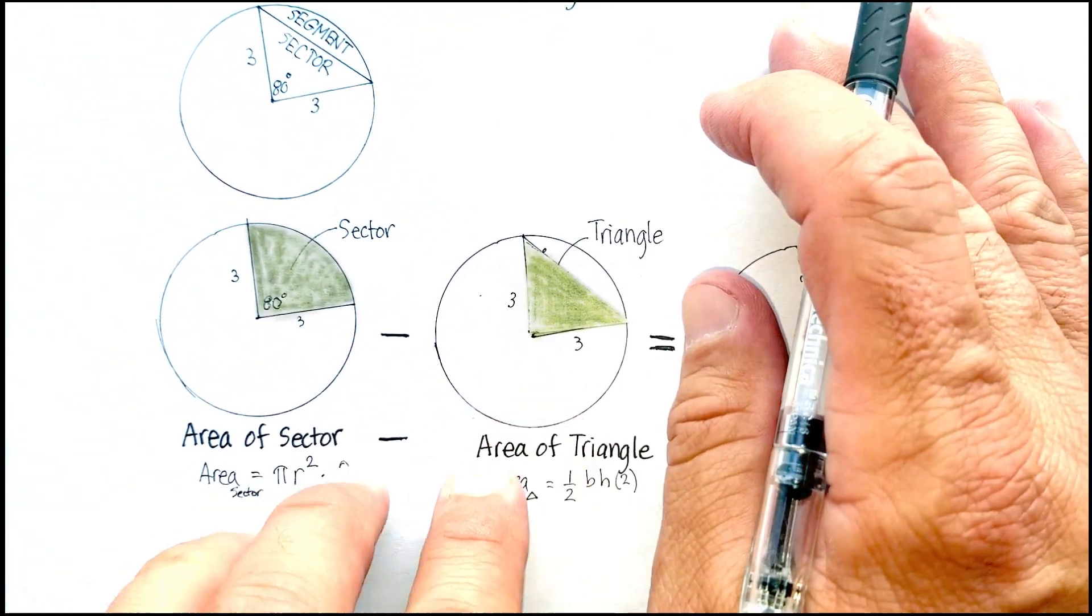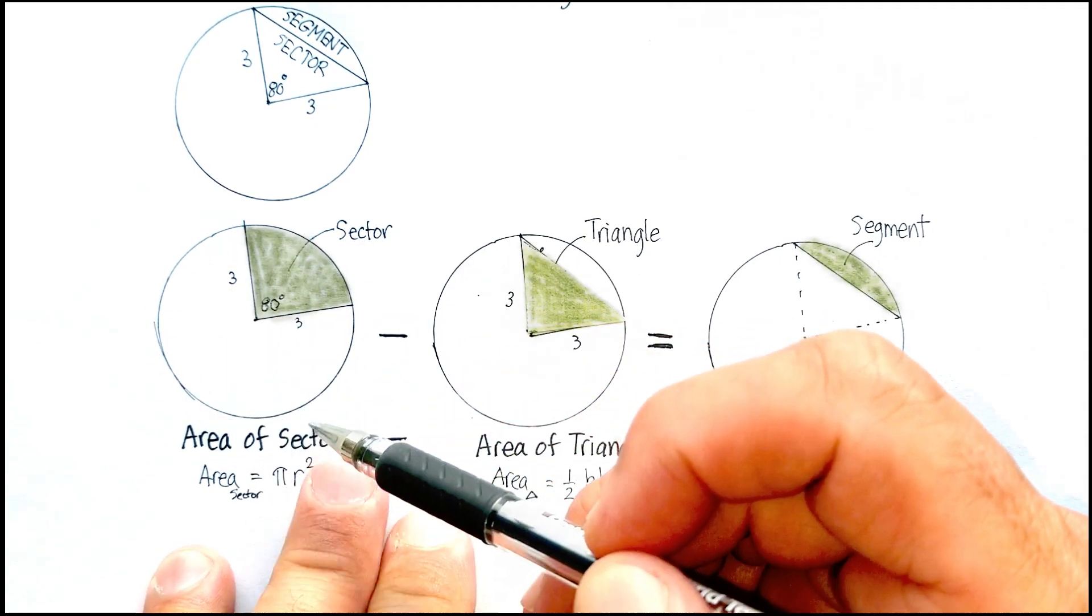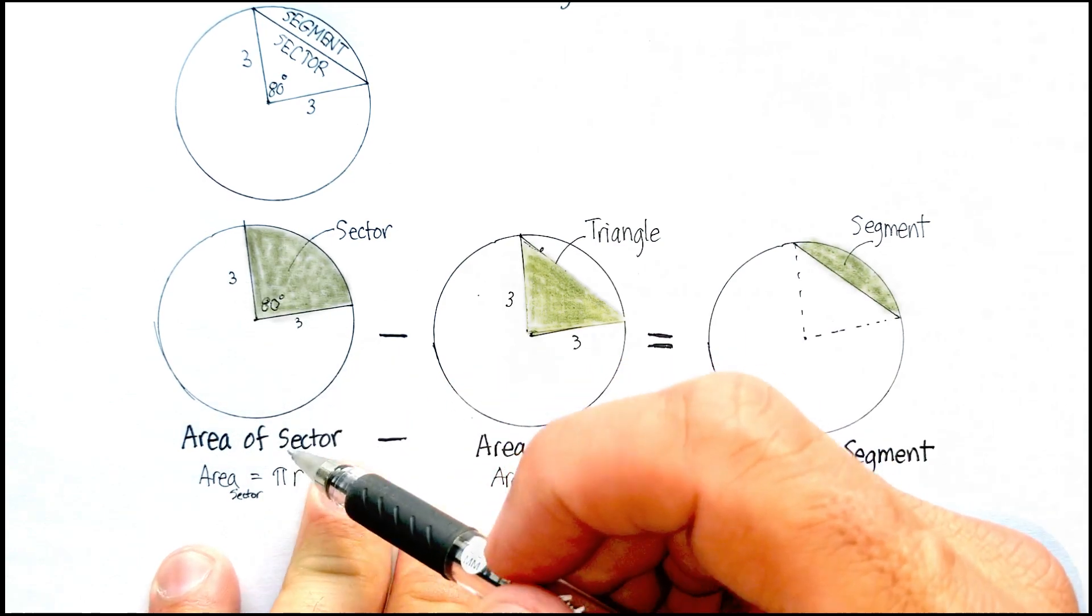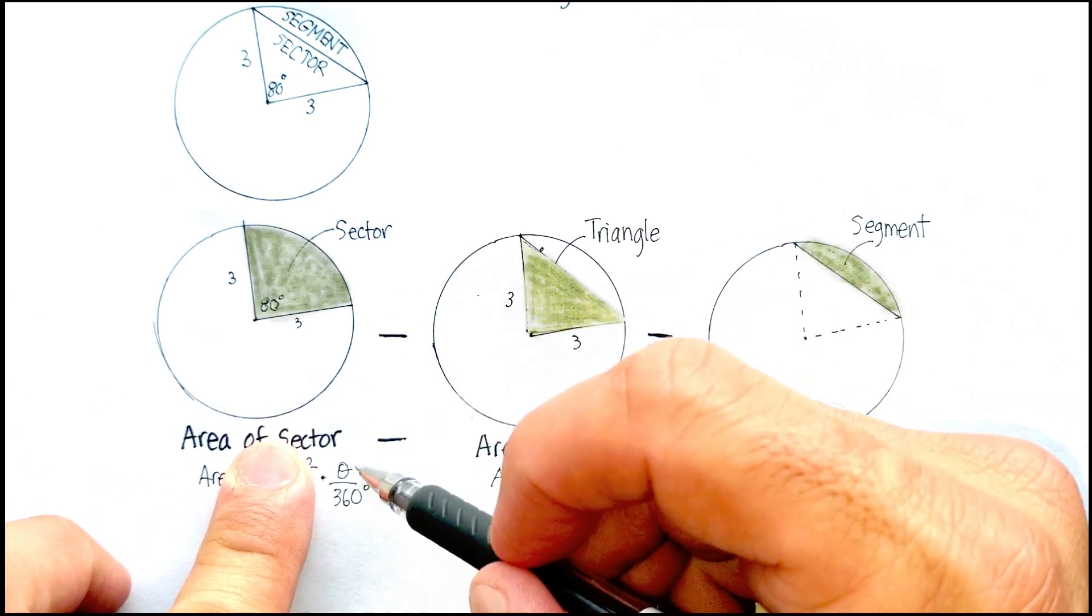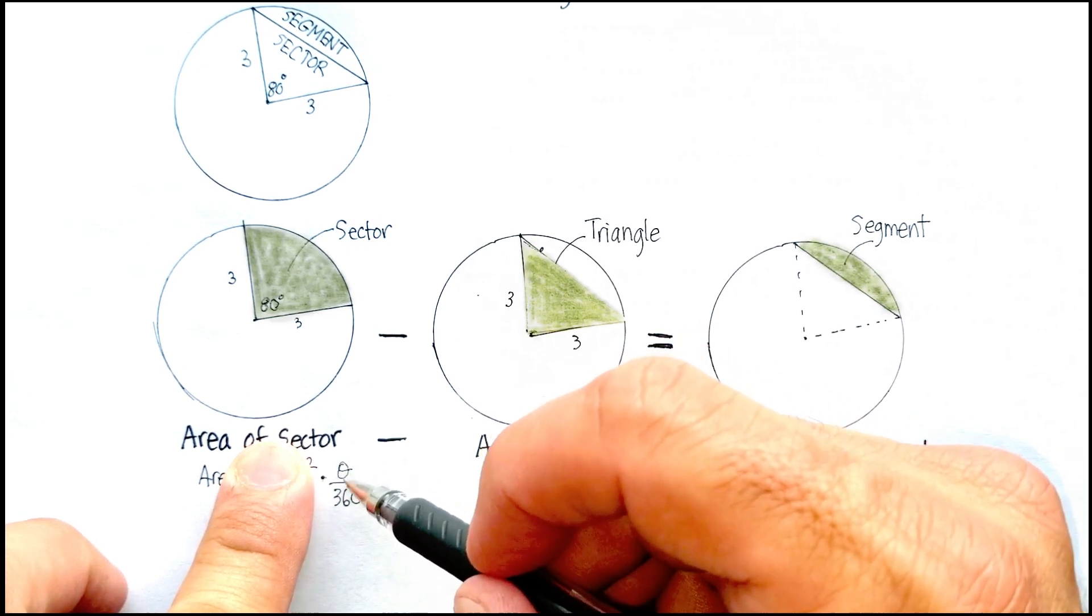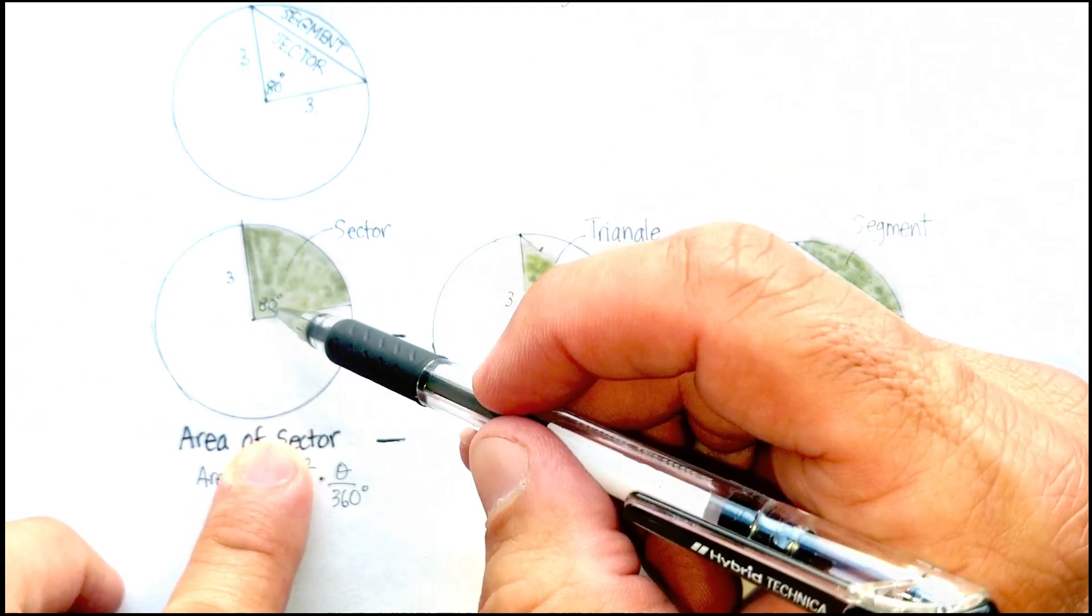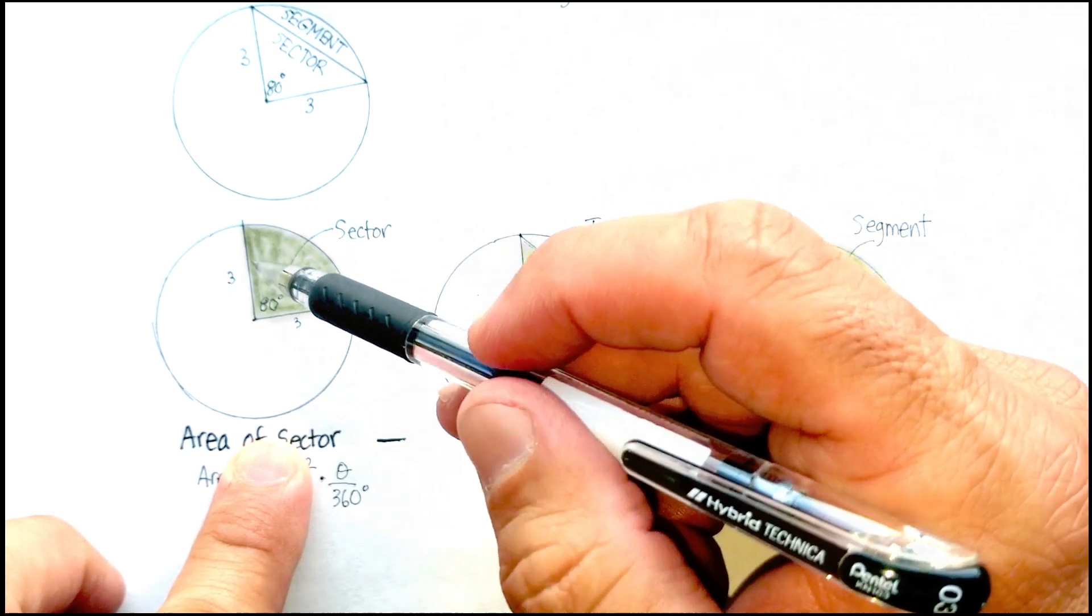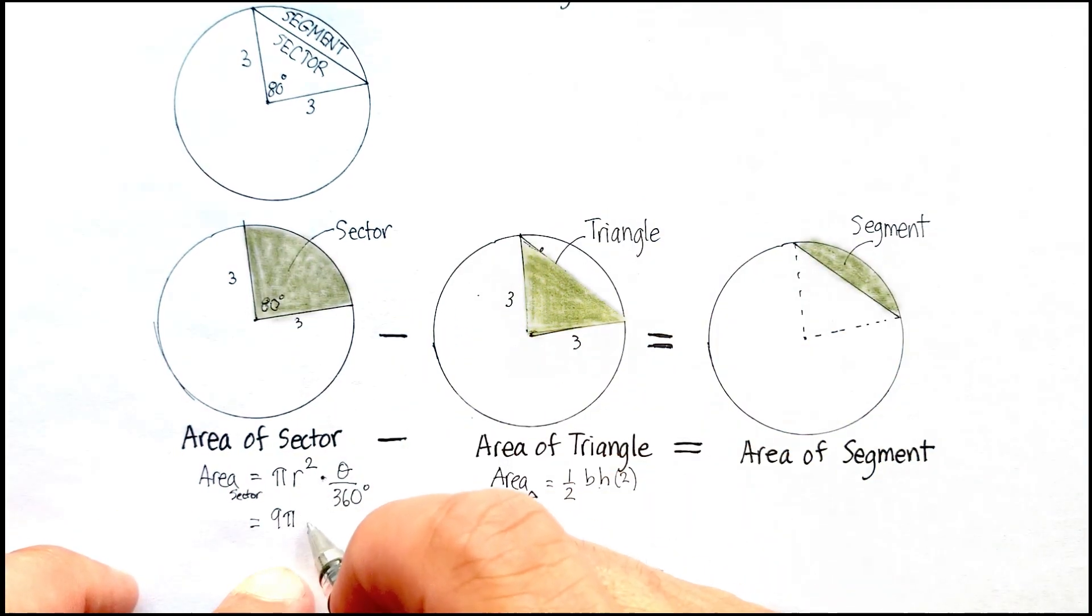Now, let's focus first on the area of the sector. We know that the area of a complete circle is pi r squared. And we know, for example, here that our radius is three. So three squared will give us nine pi. Now, what I have here is theta over 360. 80 degrees of 360 will give you the proportion that's this sector. So we're going to find the whole area, multiply it by the proportion that this is, and we should come up with our number.